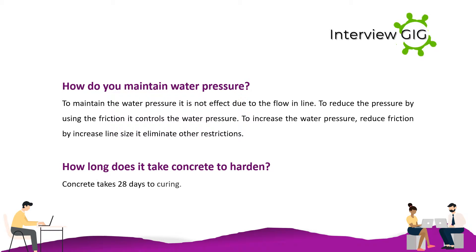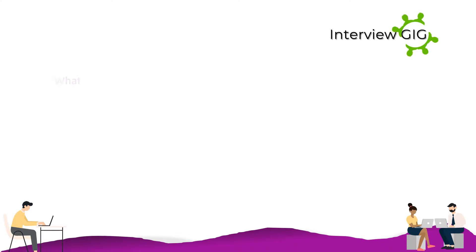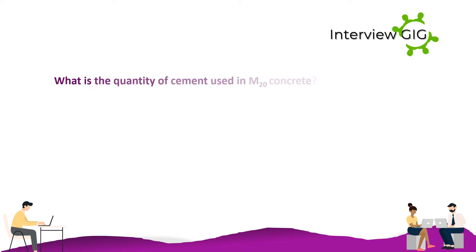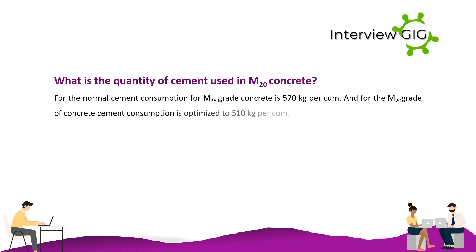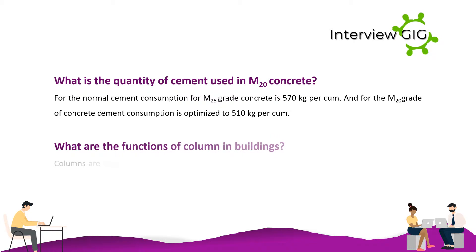How long does it take concrete to harden? Concrete takes 28 days to cure. What is the quantity of cement used in M20 concrete? The normal cement consumption for M25 grade concrete is 570 kg per cubic meter, and for M20 grade concrete the cement consumption is optimized to 510 kg per cubic meter.